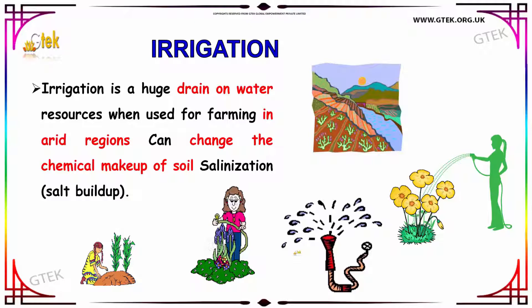Irrigation can change the chemical makeup of soil through salinization — that is, salt buildup. You can see here this land shows signs of salinization.